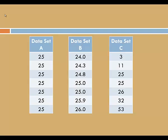Take a look at data sets B and C. It might take you a minute, but I'm sure you could figure out that the mean, median, and mode for all three data sets is 25. But clearly, data sets A, B, and C are distinct. In data set A, we see one value repeated seven times. In data set B, we see a little more variety. And in data set C, we see the most variety.